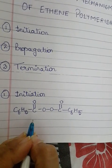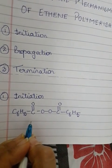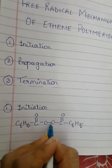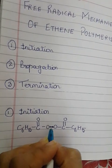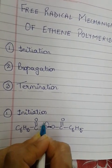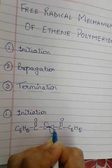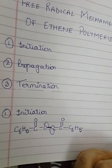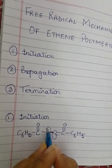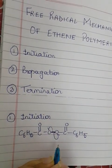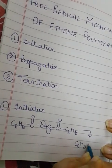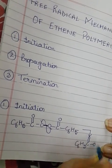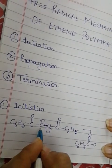Now the generation of free radical takes place by homolytic fission. Homolytic fission means if we have one bond, it comprises of two electrons. So this oxygen will take one electron, the another oxygen will also take one electron. That means both the electrons have gone to their respective atoms.